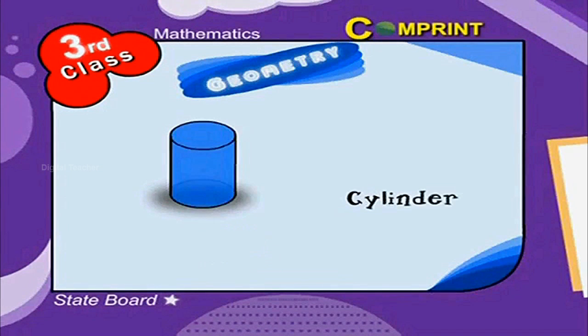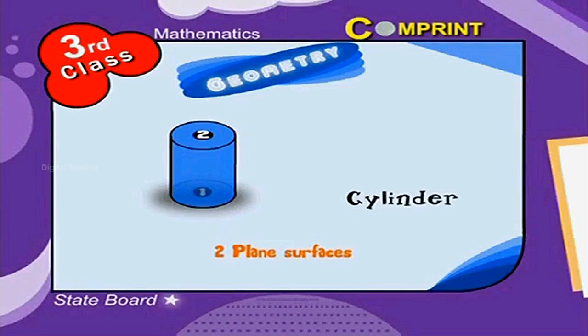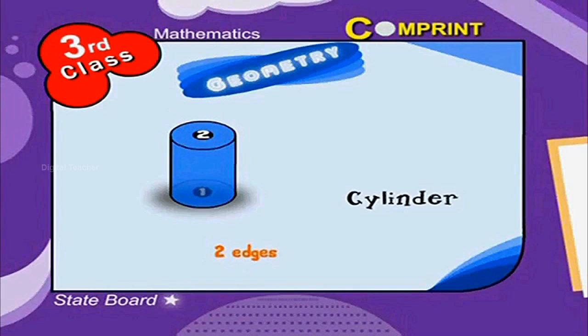Cylinder. It has two plain surfaces, one curved face, zero corners, and two edges.